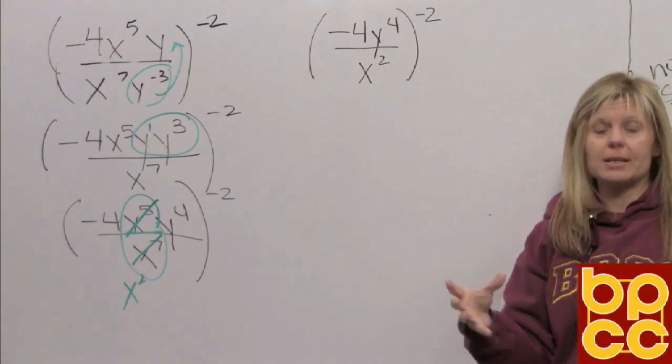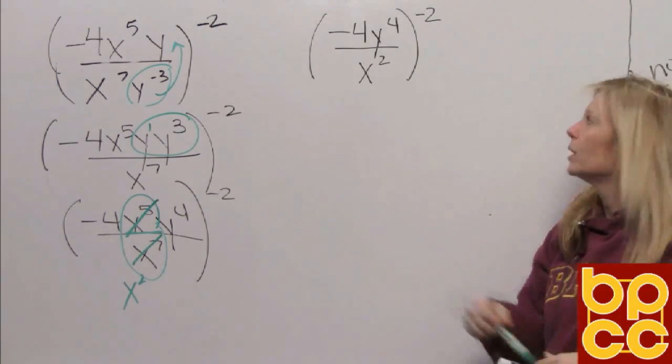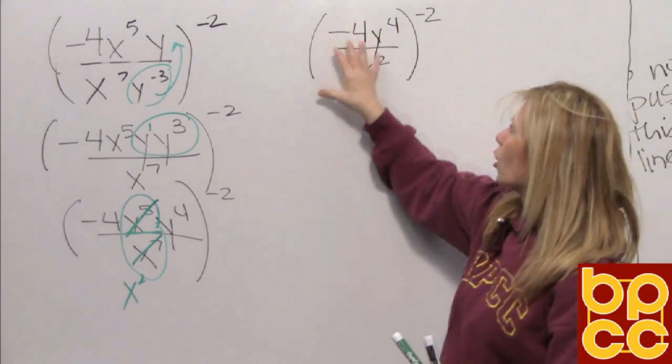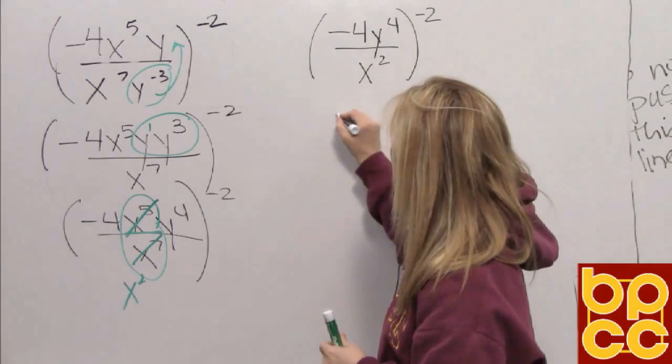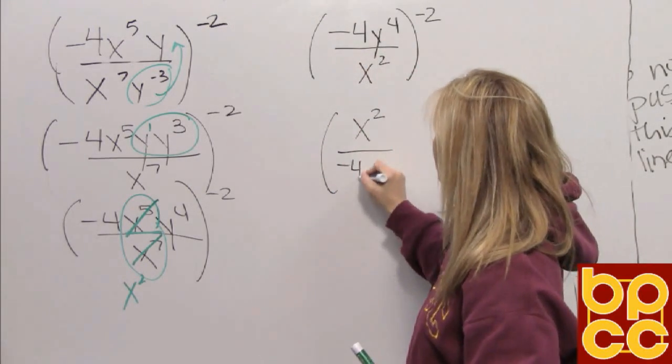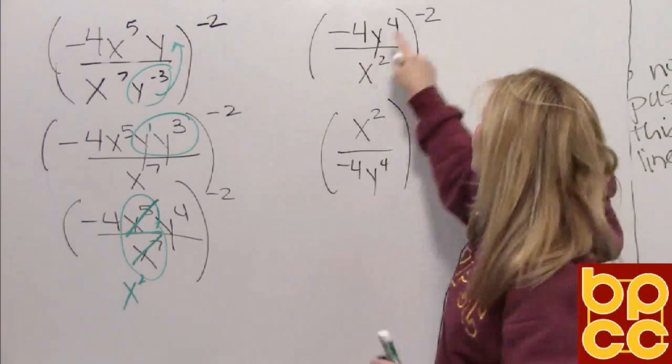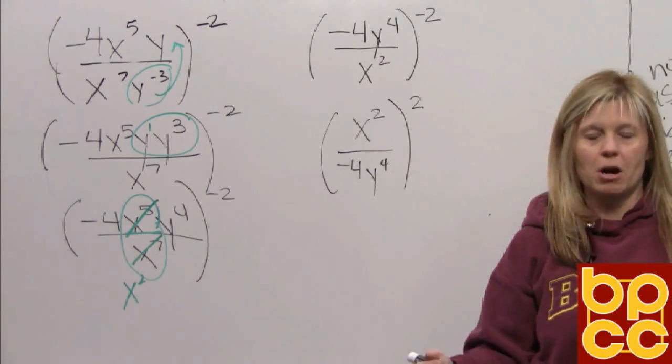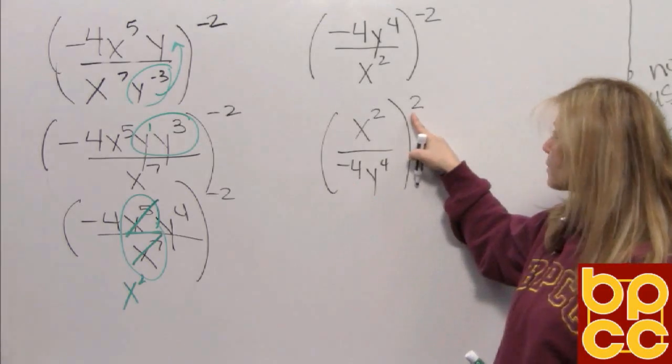There's nothing else we can do inside. We've done everything inside we possibly can do. So now we have to deal with this negative exponent. Because of the parentheses it belongs to everybody. So that means this whole expression is going to flip. We're going to do the reciprocal. Which means the x squared is going to go to the numerator and the negative four y to the fourth goes to the denominator. Remember all doing a reciprocal does is make the exponent positive. It doesn't change the value of the other numbers. So this negative four is going to stay negative four. Okay this was the exponent. Now it's positive.